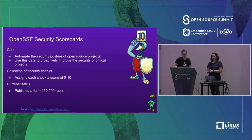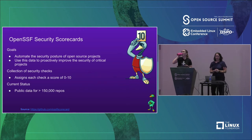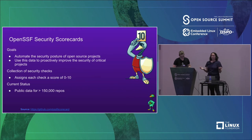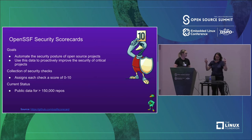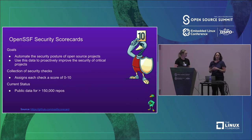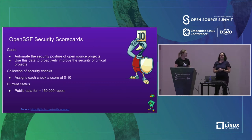A little bit more on the Scorecards project. This is a newer project we created in the OpenSSF about a year ago. The goals were pretty simple - we wanted a way to automate the security posture of these open source projects so we can make better decisions on the risk that we're willing to take, and give developers more insight into these open source projects. The sub-goal is really to help inspire projects to earn a better score, since a lot of these open source projects are single-maintainer or not security experts and don't realize some of these things are best practices.